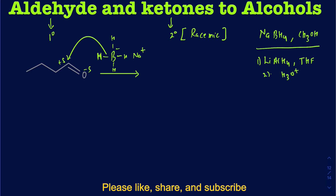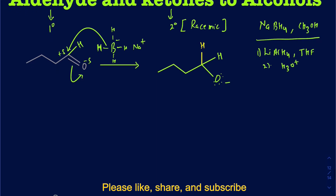When the hydride attacks the carbonyl carbon, the pi bond breaks and the electrons come up to oxygen. You end up with an O-minus — an alkoxide — to keep track of your electrons. The hydrogen from NaBH4 has now been added to the carbonyl carbon. Remember, there was already a hydrogen on that carbon because it was an aldehyde.